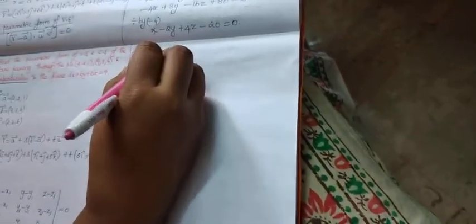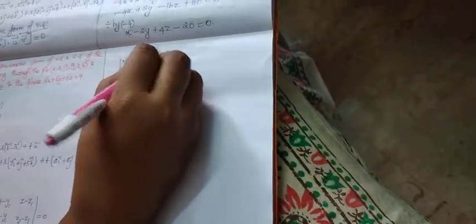Now substitute the values here. What is our x1, y1, z1? Our first point is x1, y1, z1. So determinant of (x minus 2, y minus 2, z minus 1).